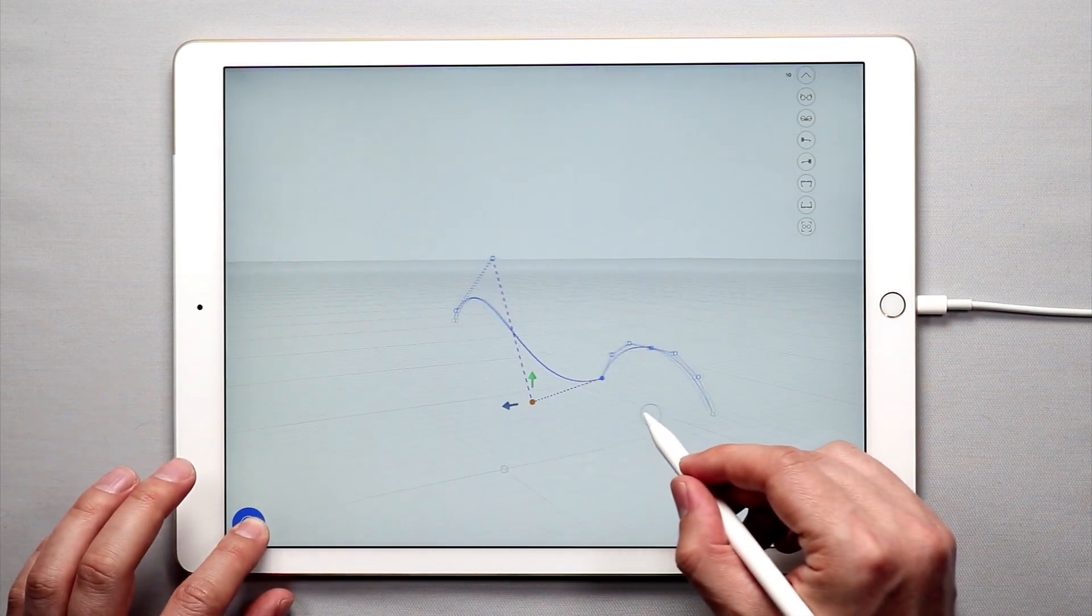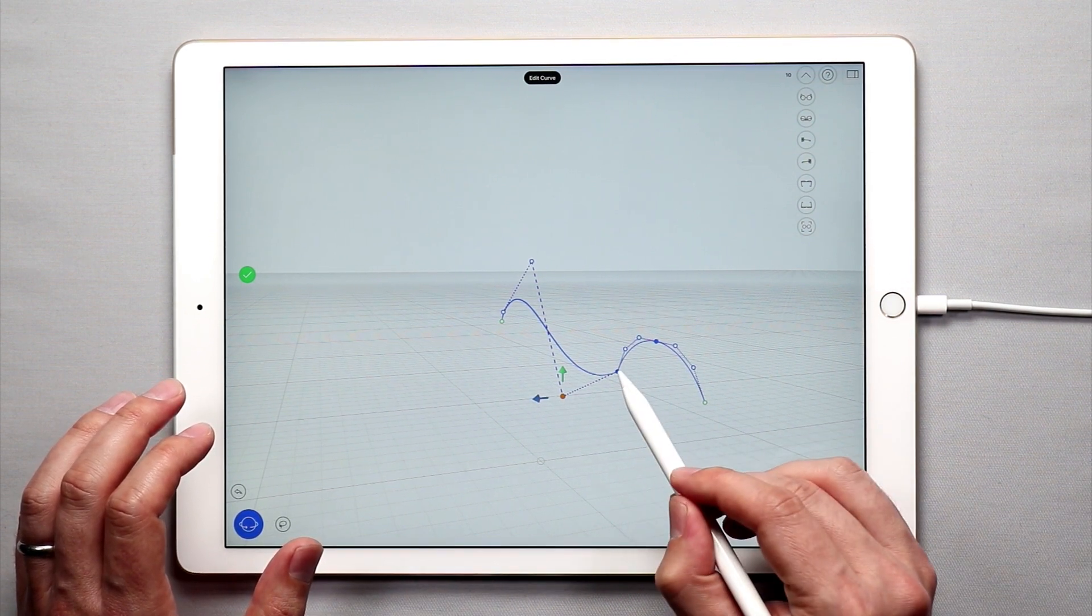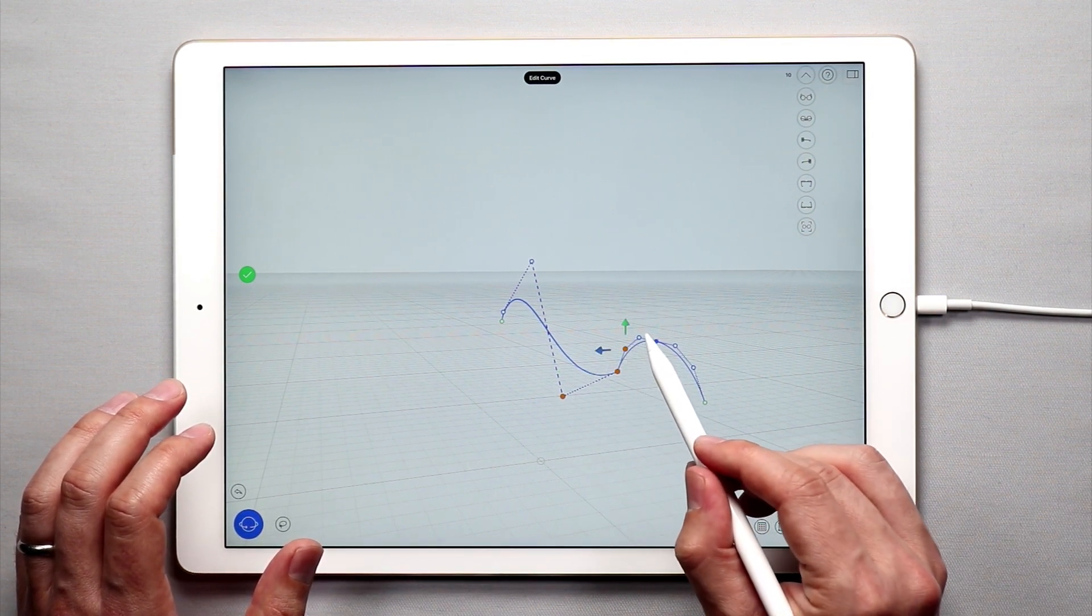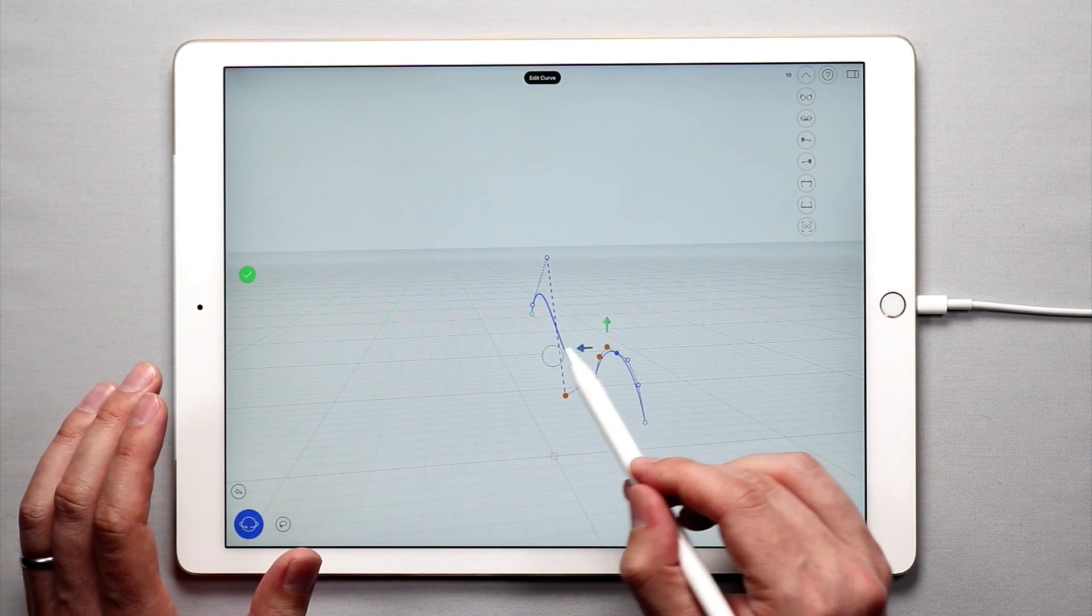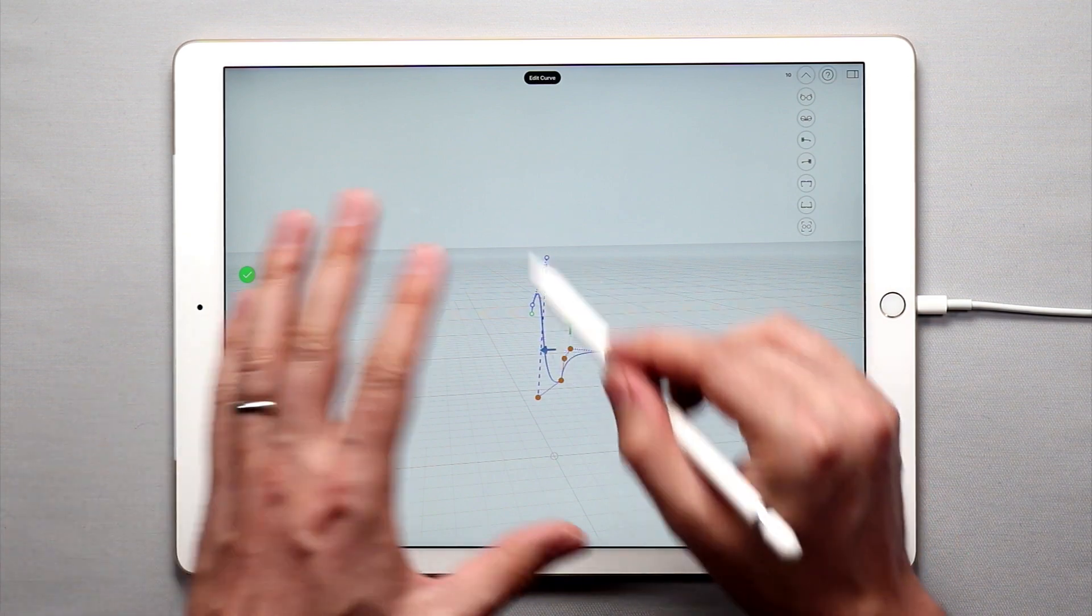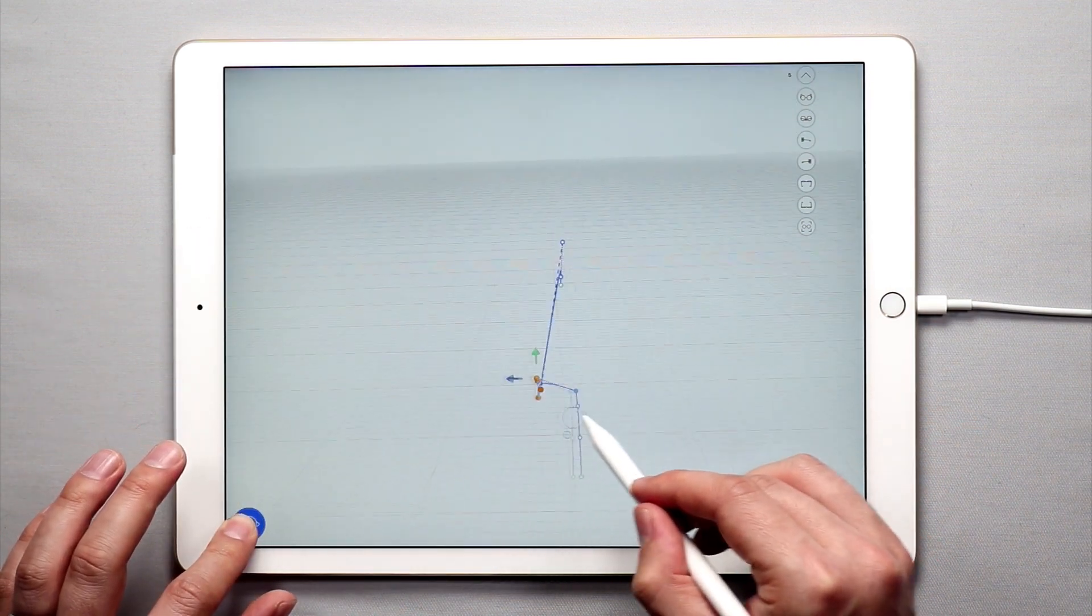What's helpful is if I want to select multiple points, once I have one selected I can double tap on several points and I can move these with the arrows. I can move them in 3D space—it makes it really easy to make a more compound curve.